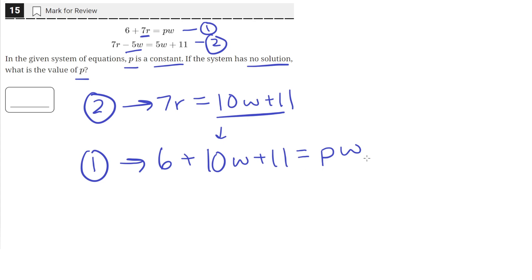And that happens when the w terms cancel out. So in this case, that would happen when pw cancels out 10w.